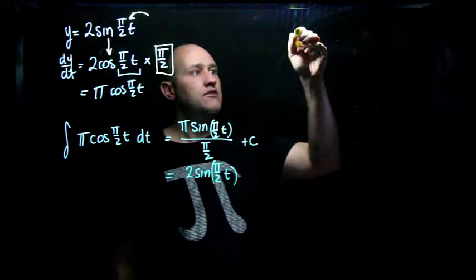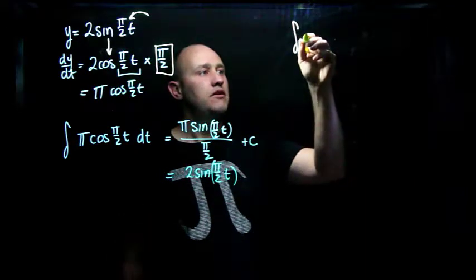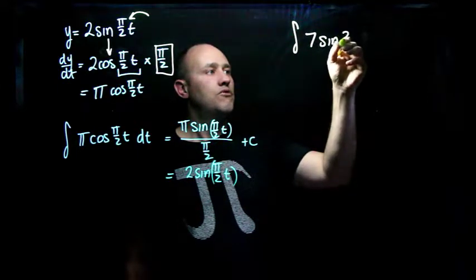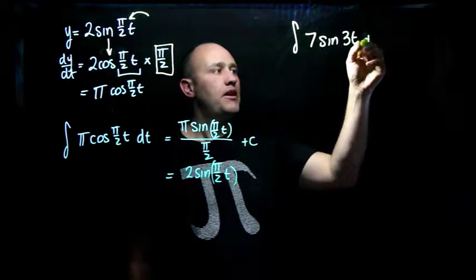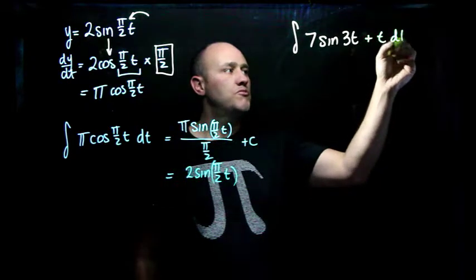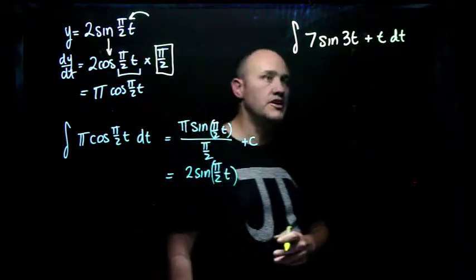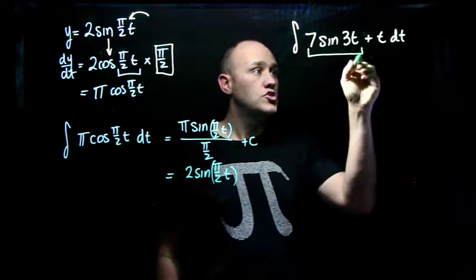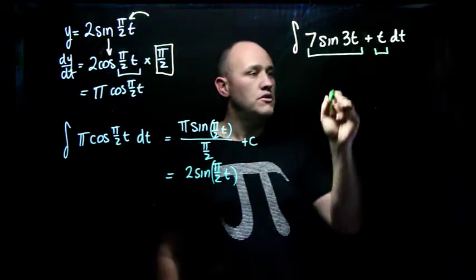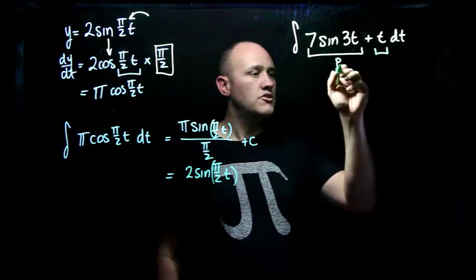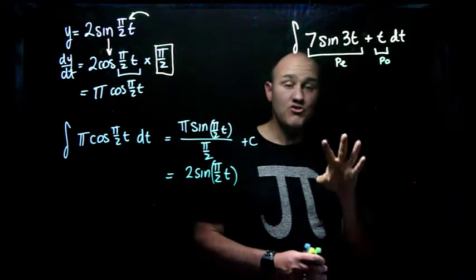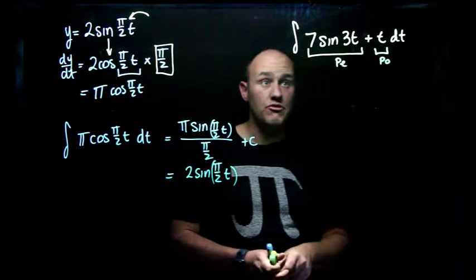All right, let's just do this last example. We're going to integrate 7 sine of 3t plus t with respect to t. Lots of t's in there. Okay, the first thing we need to recognize, I've done this deliberately, is we have term 1 and term 2. This one is periodic, and this one is a polynomial linear term. So we're going to treat them separately and use the separate rules.